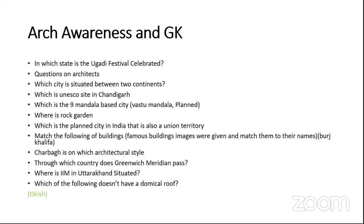There was a question about the plant city in India, which is also a Union Territory — that was one of the easiest questions. Then a match-the-following on buildings, with only one well-known monument; the others were not that famous. Charbagh — the typical Mughal Persian style of gardens and courtyards — was asked. Greenwich Meridian, which defines time standards all over the world, was asked. The World IIM of Uttarakhand was also asked, along with which of the following doesn't have domical rules.